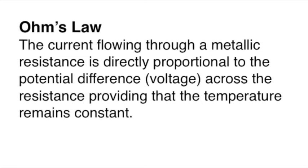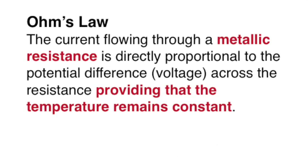Formally it says that the current flowing through a metallic resistance is directly proportional to the potential difference, the voltage, across the resistance, providing that the temperature remains constant. The law only truly applies to metals; many semiconductors vary from this and it has to be that the temperature remains constant. If the temperature goes up, the activity of the atoms prevents the electrons flowing so easily and the resistance increases.